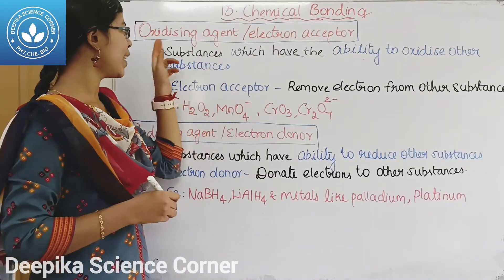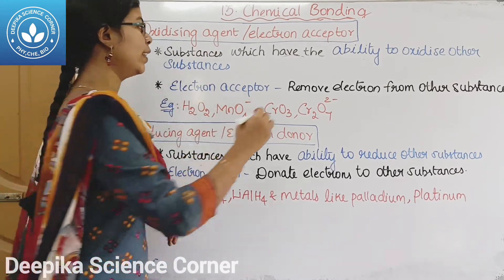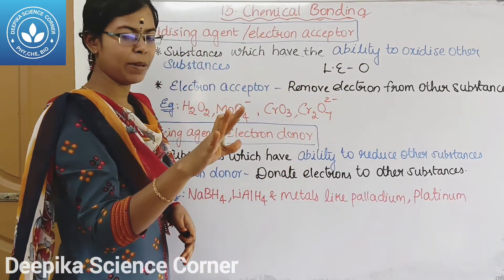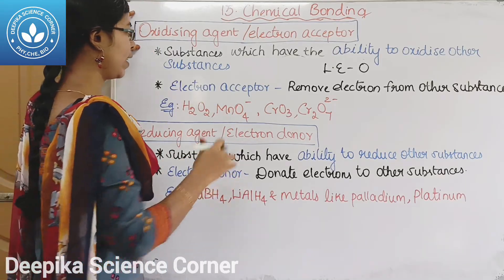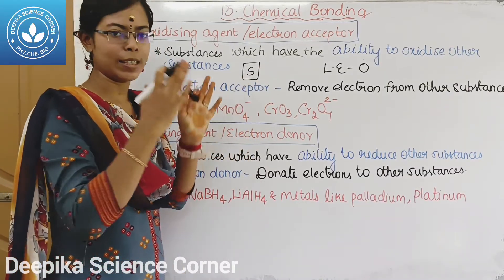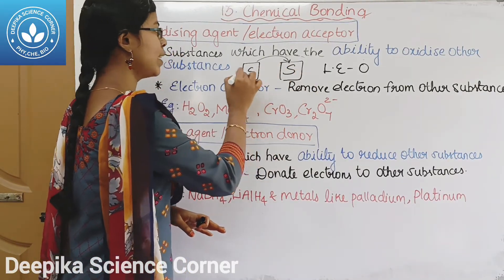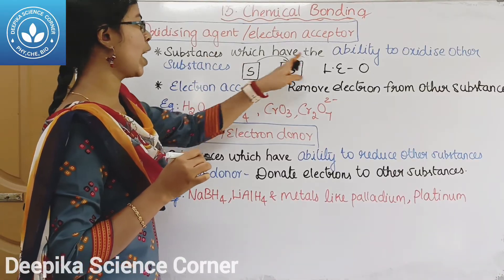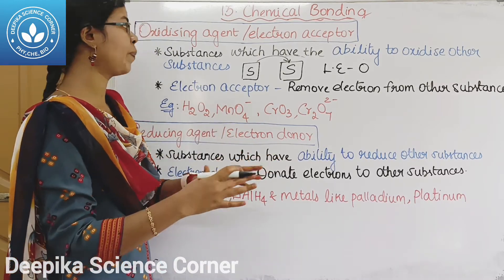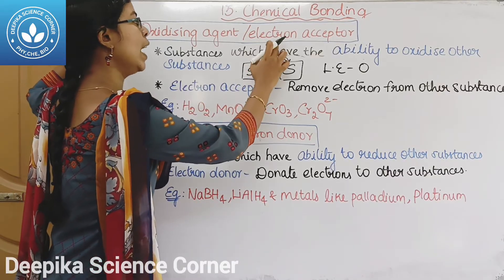Next, what is an oxidizing agent? In an oxidation reaction, there will be a loss of electron. When there is a loss of electron, oxidation reaction occurs. The substance which has the ability to oxidize other substances is called the oxidizing agent. This substance is also called the electron acceptor.